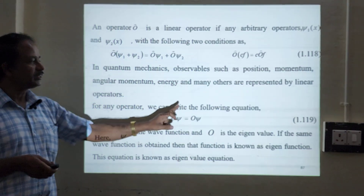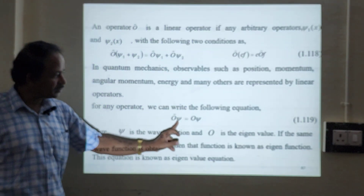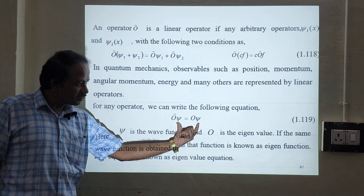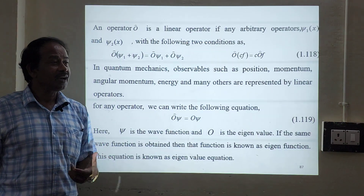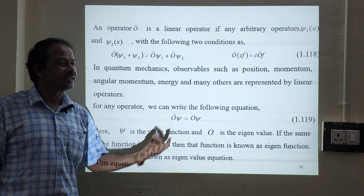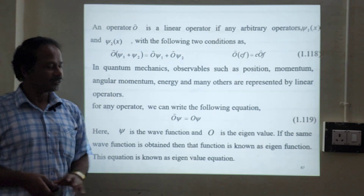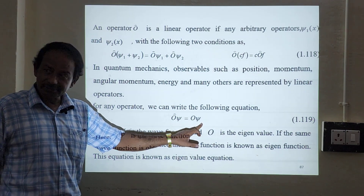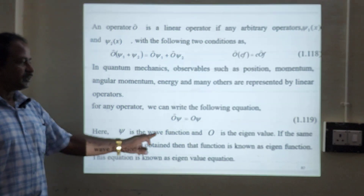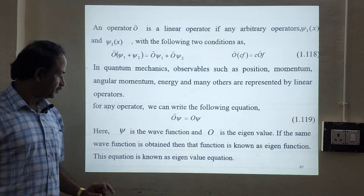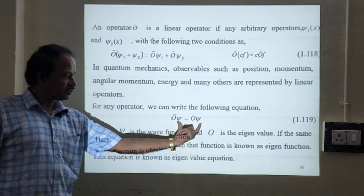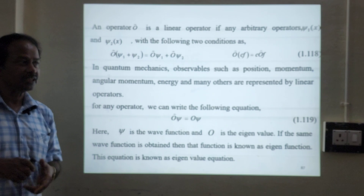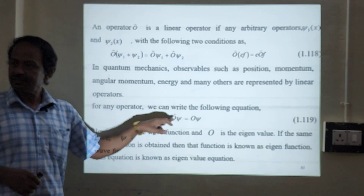For any operator, we can write the following equation: operator O operates on wave function psi will give you an eigenvalue times a function. If the input function and output function are the same, we say that psi is an eigenfunction. If they are not the same, then it is an ordinary wave function. The equation O psi = lambda psi is called the eigenvalue equation.